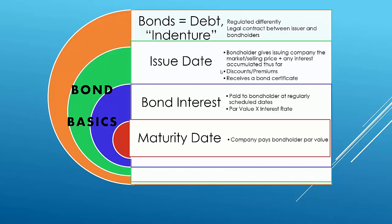The general characteristics of a bond include an issue date, a maturity date, and a stated rate of interest that never changes. An important question is: what happens when the rate printed on the bond certificate doesn't reflect the current market rate?